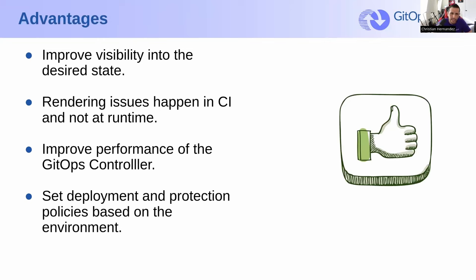Let's take a look at some of the advantages. At a glance, the advantages of rendered manifests are: you get improved visibility into the desired state. You eliminate obfuscation introduced by config management tooling and improve visibility into your desired state. You reduce the risk of built-in tooling with a truly immutable desired state. You find out what goes wrong earlier in the process — in CI, versus right at deploy time. You get improved performance for your GitOps controller, since it doesn't have to render anything anymore. This is especially true with Argo CD — you get a significant performance boost. And you can set deployment protection policies based on each environment, getting pretty granular.